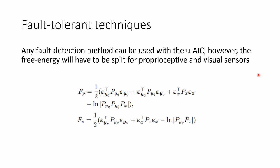So fault-tolerant control techniques, any technique can be used in conjunction with the Unbiased Active Inference. We use a technique that relies on probabilistically robust thresholds. The details are in the paper. No novel contributions here. The only thing to be noted is we would need to separate proprioceptive and visual sensory data in separate free energy terms for the residual and threshold detection.